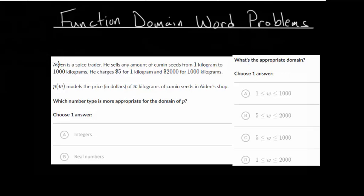So we have that Aiden is a spice trader. He sells any amount of cumin seeds from 1 kilogram to 1,000 kilograms, and he charges $5 for 1 kilogram and $2,000 for 1000 kilograms. P(w) models the price in dollars of w kilograms of cumin seeds in Aiden's shop. The first thing we need to figure out is which number type is most appropriate for this domain, and then what is that domain?